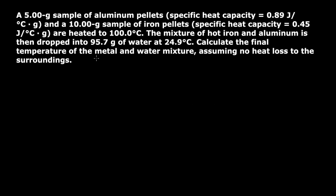In this question, we have a 5 gram sample of aluminum and a 10 gram sample of iron. We're given the specific heat of both of them, and we're going to heat them up to 100 degrees Celsius. Then we're going to take both the aluminum and the iron and put them into 95.7 grams of water at a temperature of 24.9 degrees Celsius. The question wants to know what the final temperature is going to be of the aluminum, the iron, and the water.